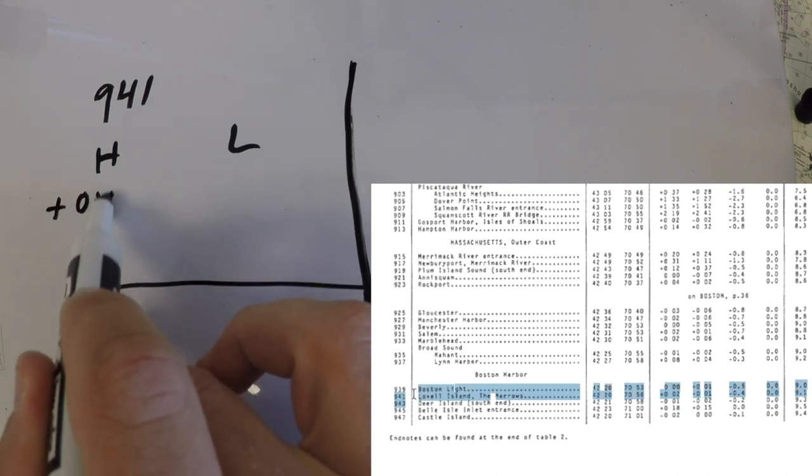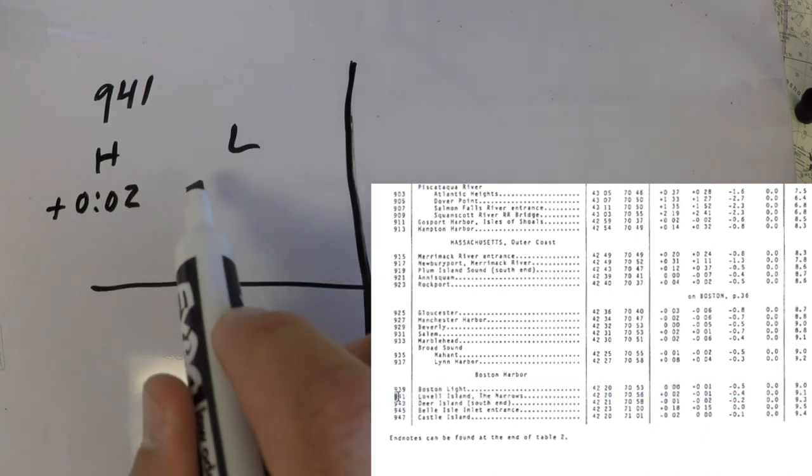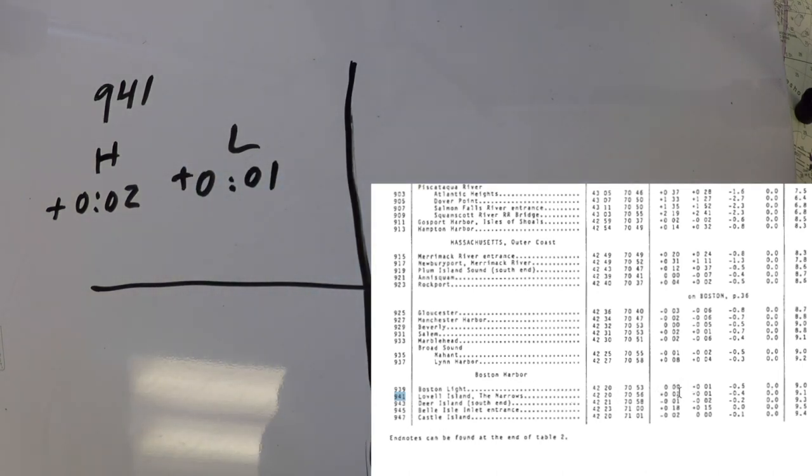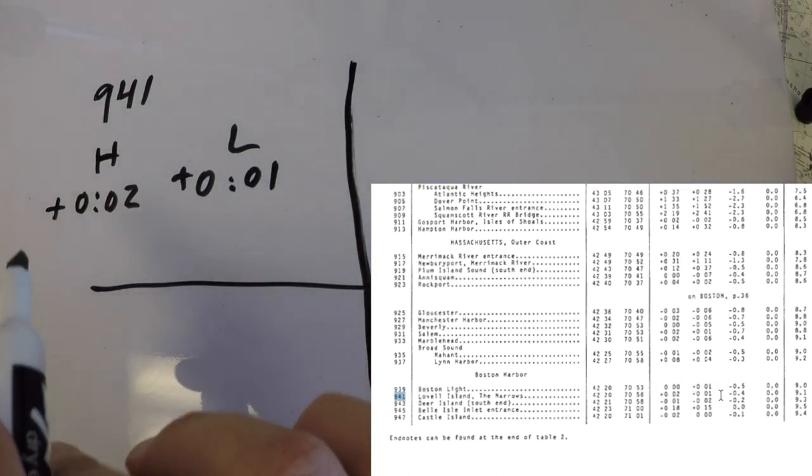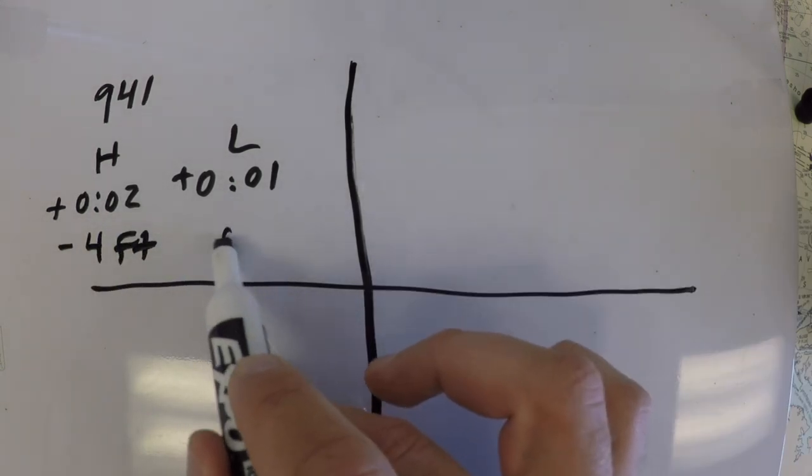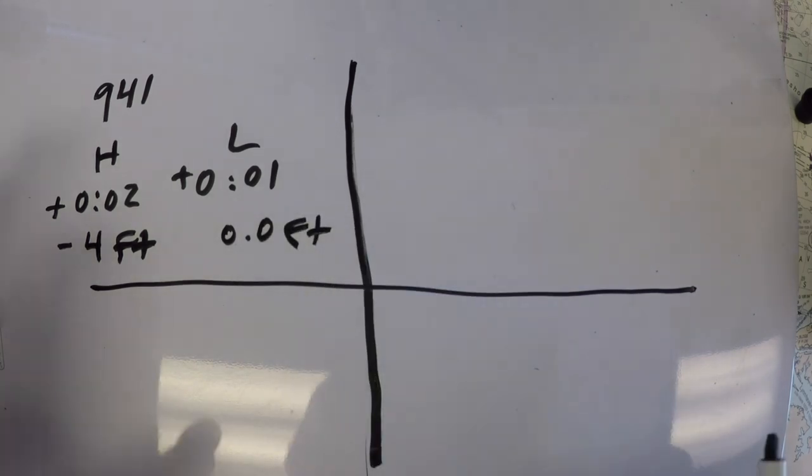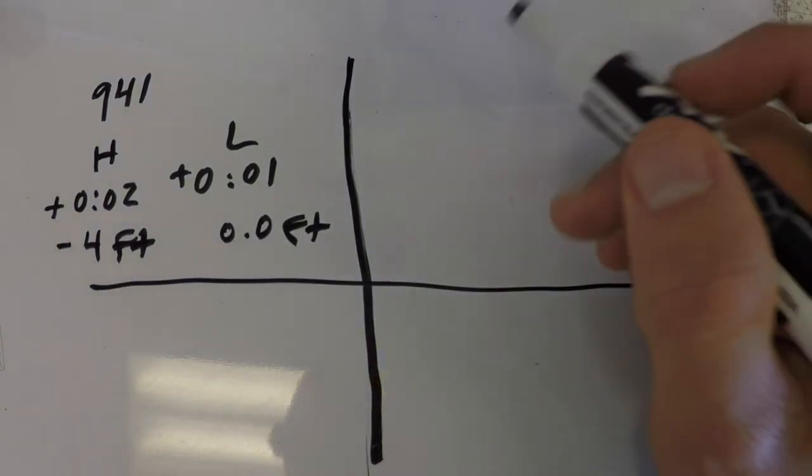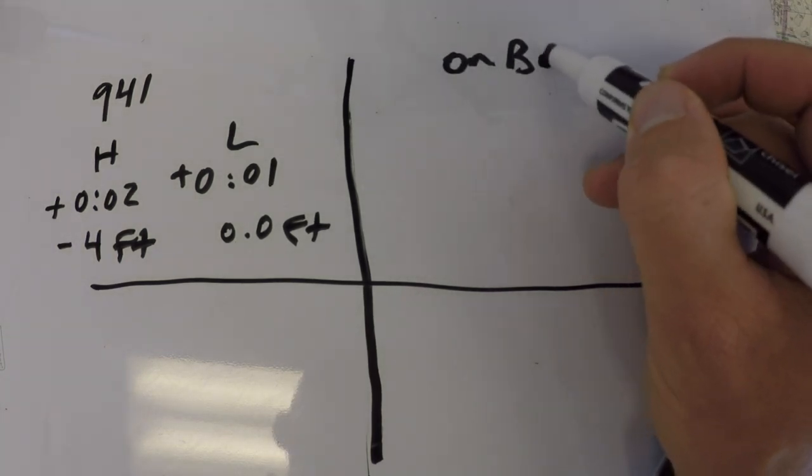And we see that the high tide and the low tide are given. The offsets are zero two minutes for the high and zero one minute for the low. And the ranges of tide differences there. For the high, it's minus four feet. For the low, it's zero feet difference. So these come from the table two corrections.